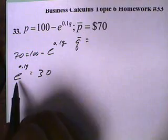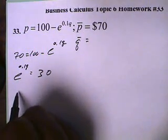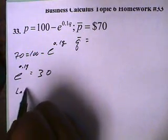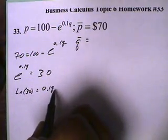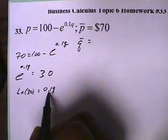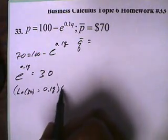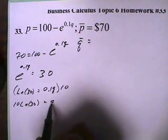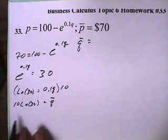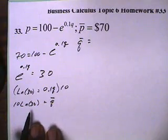Okay, now when I solve for the exponent, we're going to get the natural log of 30 equals 0.1q. Now to remove the decimal here, I'm going to multiply everything by 10. And we'll get 10 times the natural log of 30 equals q. This is the current demand. This is 10 times the natural log of 30.